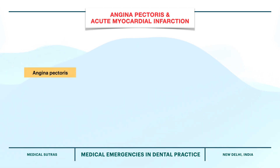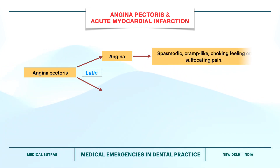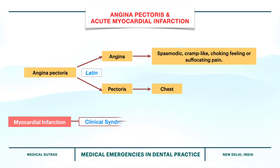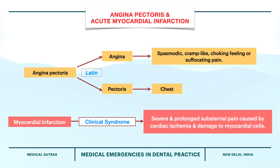Angina pectoris is derived from Latin words — angina meaning spasmodic, cramp-like, choking feeling or suffocating pain, and pectoris meaning chest. Myocardial infarction is a clinical syndrome characterized by severe and prolonged substernal pain caused by cardiac ischemia and damage to myocardial cells.